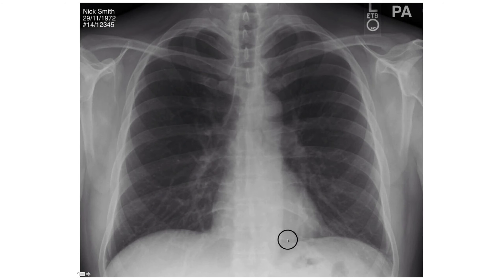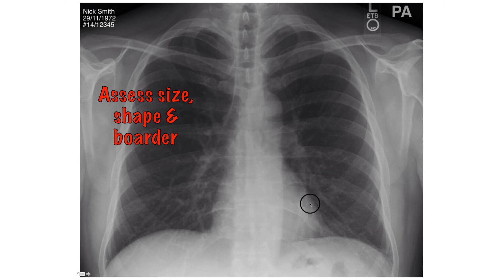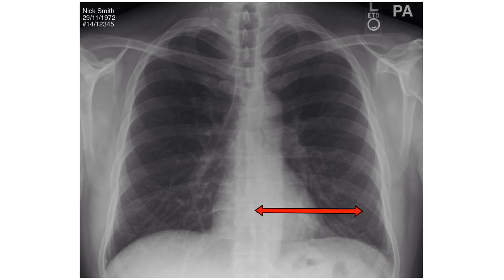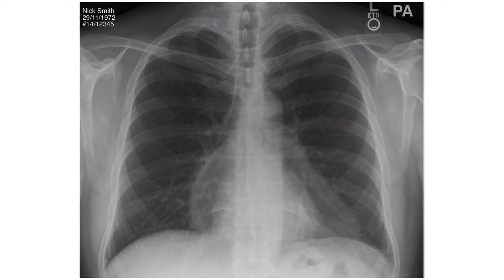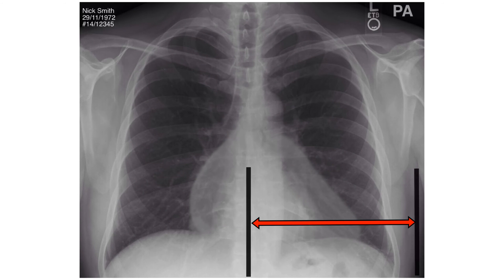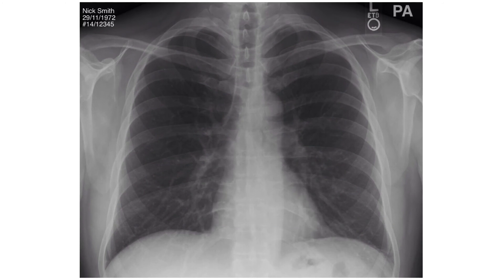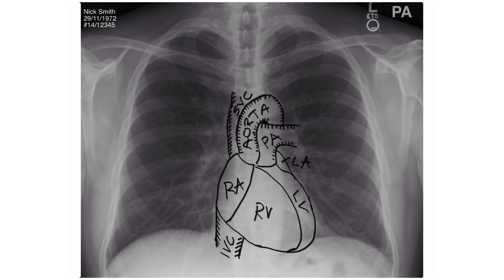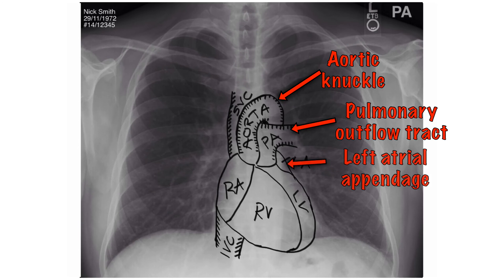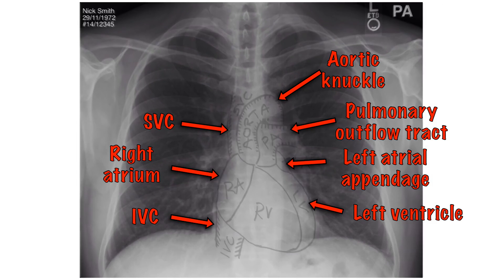Look at the size, shape and border of the heart and mediastinum. Heart size is assessed using the cardiothoracic ratio. In a PA film, the heart occupies less than 50% of the width of the thorax. A cardiothoracic ratio of greater than 50% in a PA view is abnormal and indicates cardiomegaly. Structures making up the left border of the mediastinum include the aortic knuckle, pulmonary outflow tract, left atrial appendage and left ventricle. On the right side, the border includes the superior vena cava, the right atrium and the inferior vena cava. These borders should be well defined. A blurred edge could indicate collapse or consolidation of the lung.